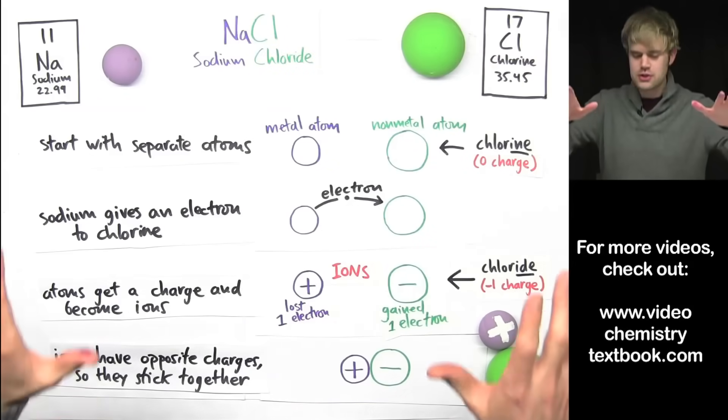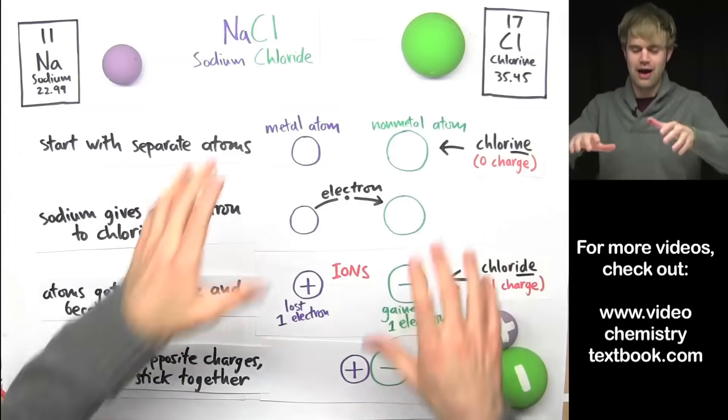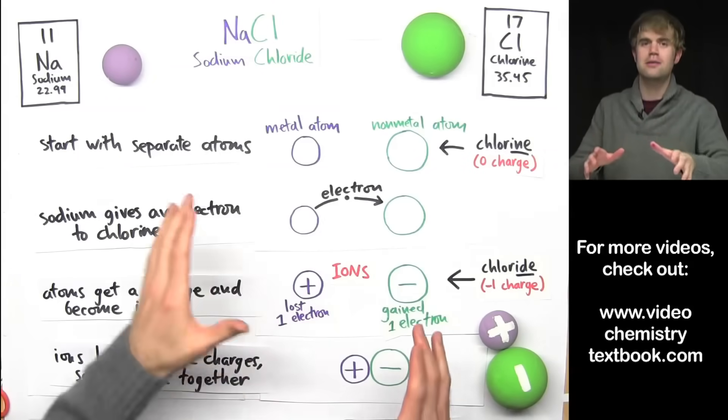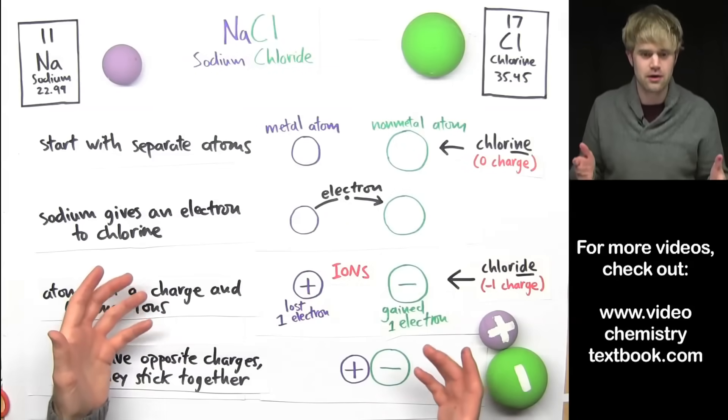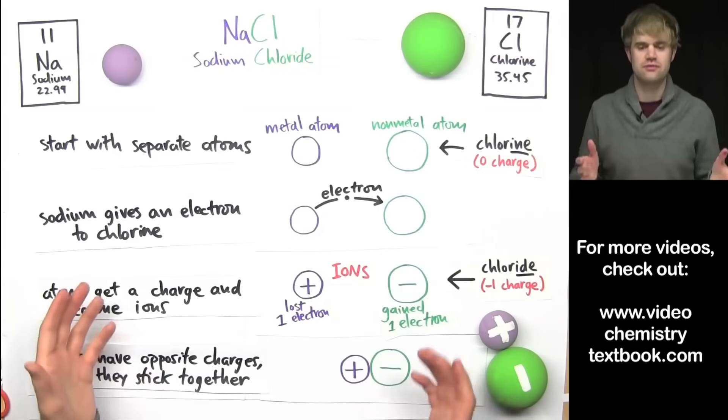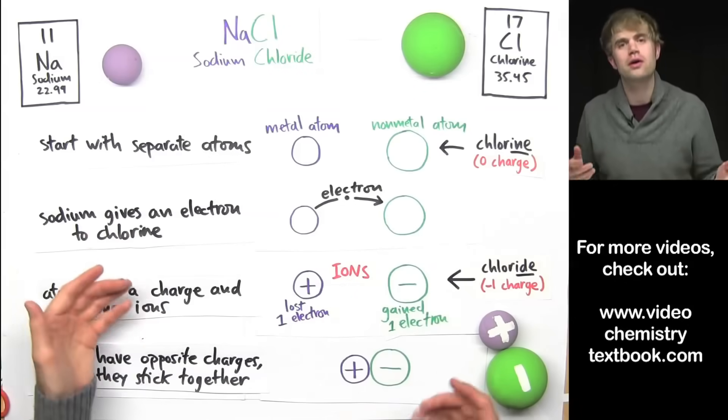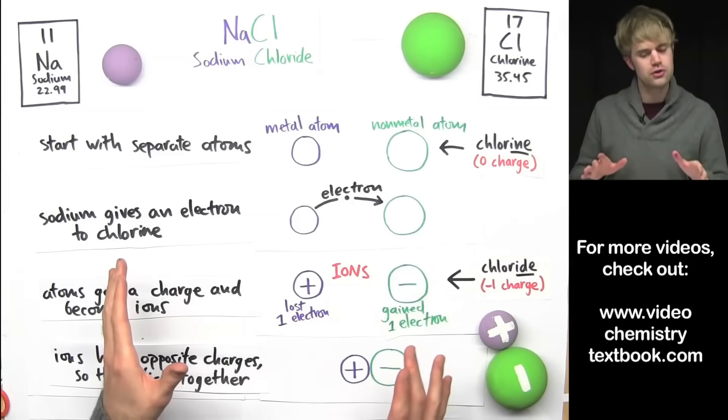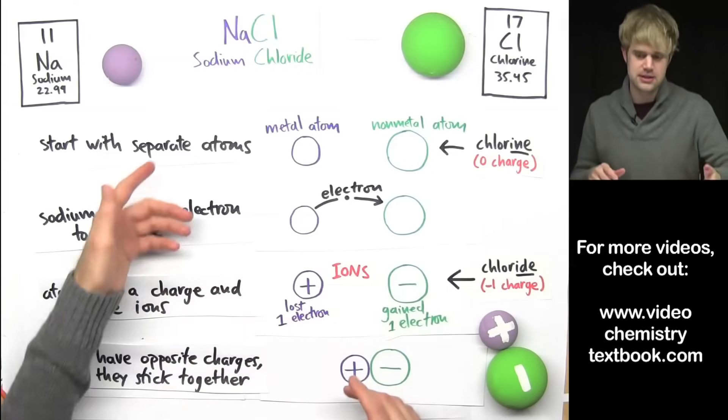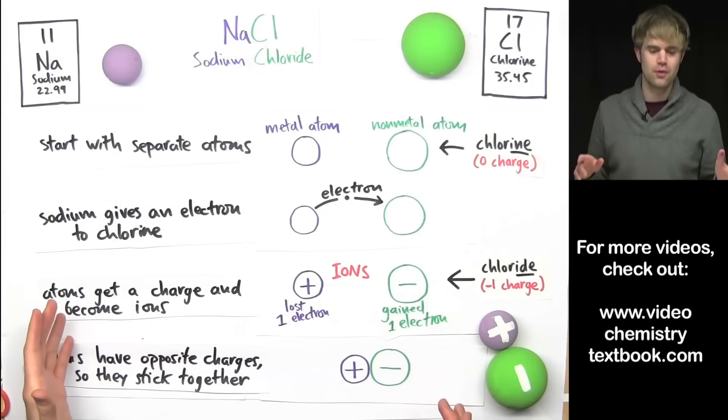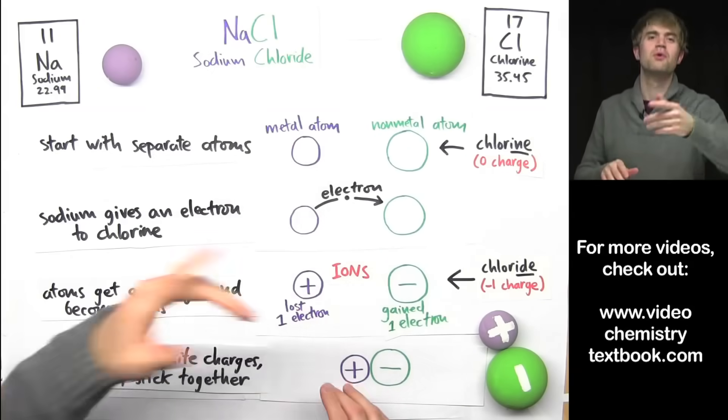This is just the very basics of how ionic bonds form. We haven't really talked about details, why the electrons move, and that kind of thing. That's what we're going to do in the next video. So to go a little bit more in depth, check that out. But before you do, just make sure that you understand these steps, these basic steps of how ionic bonds form. And then once you're good with this, we'll go from there.